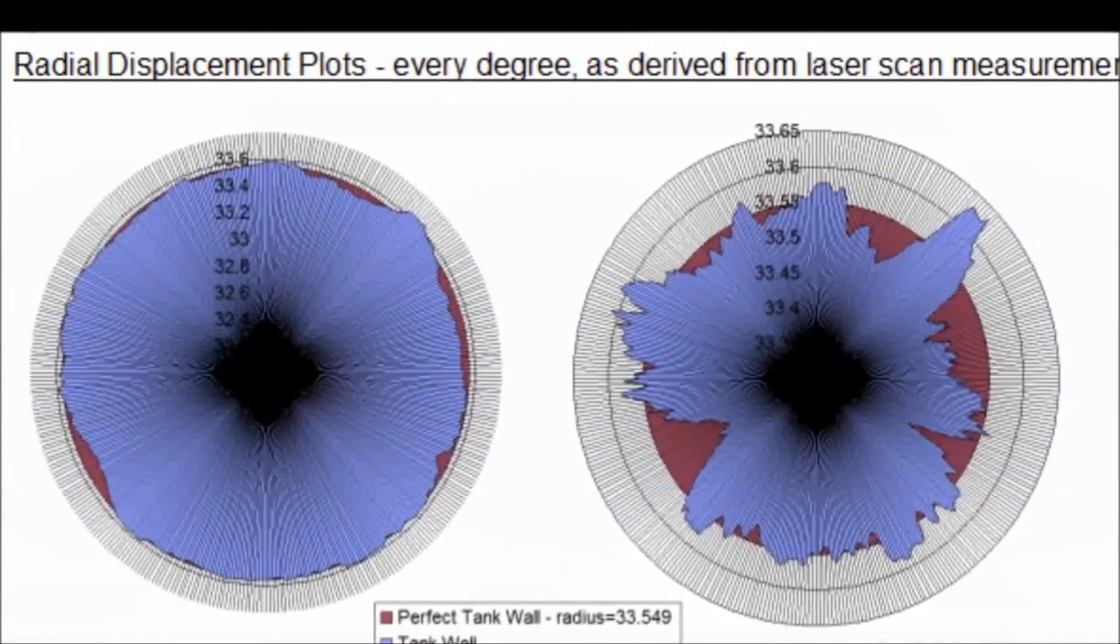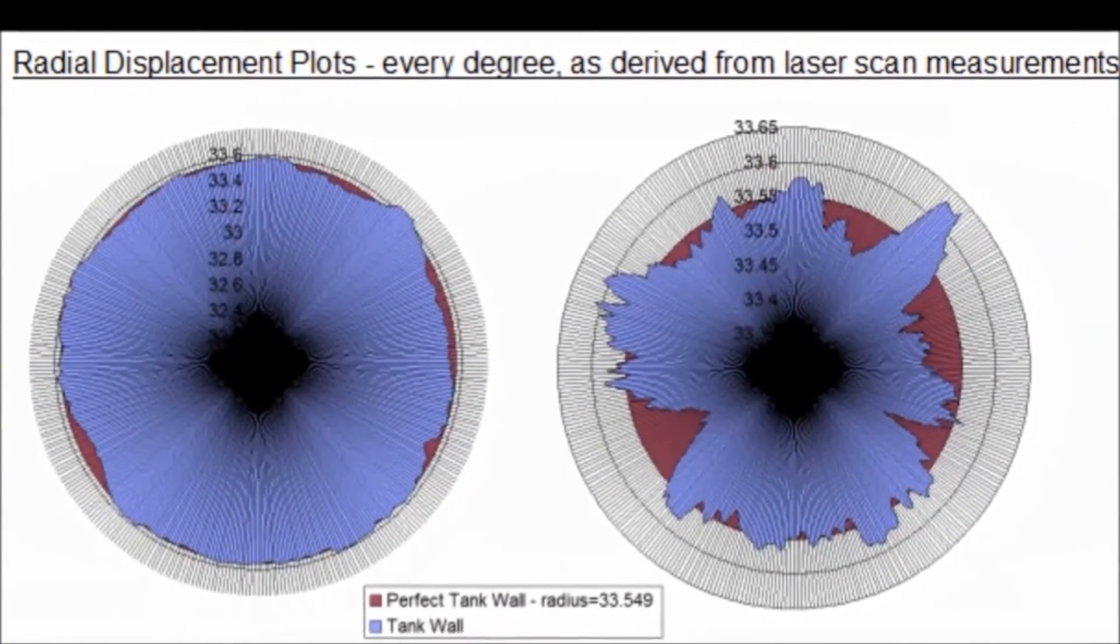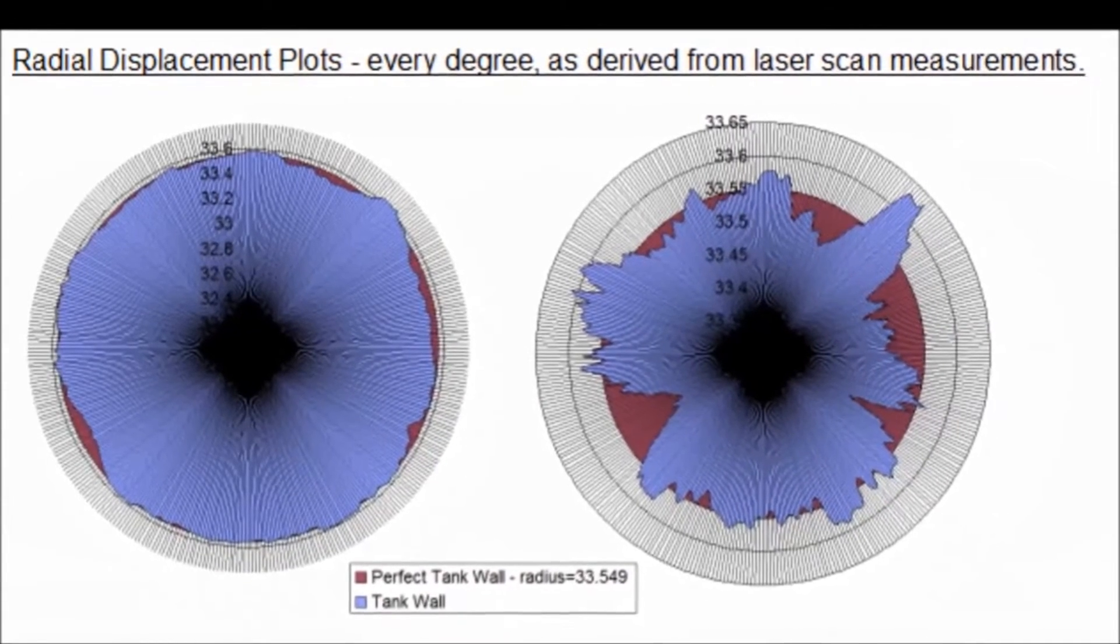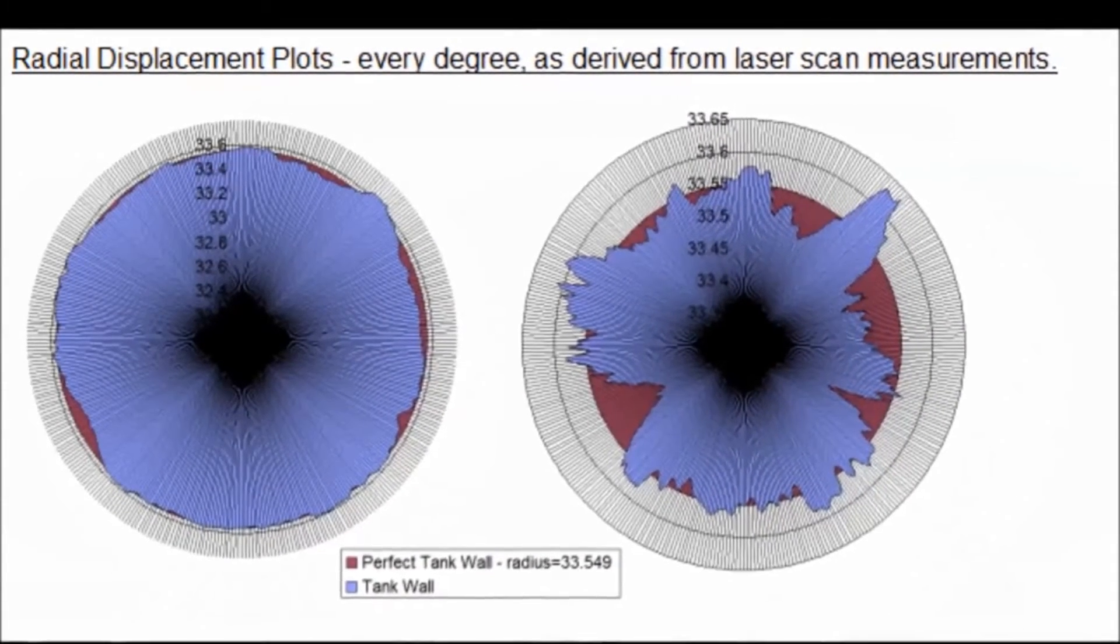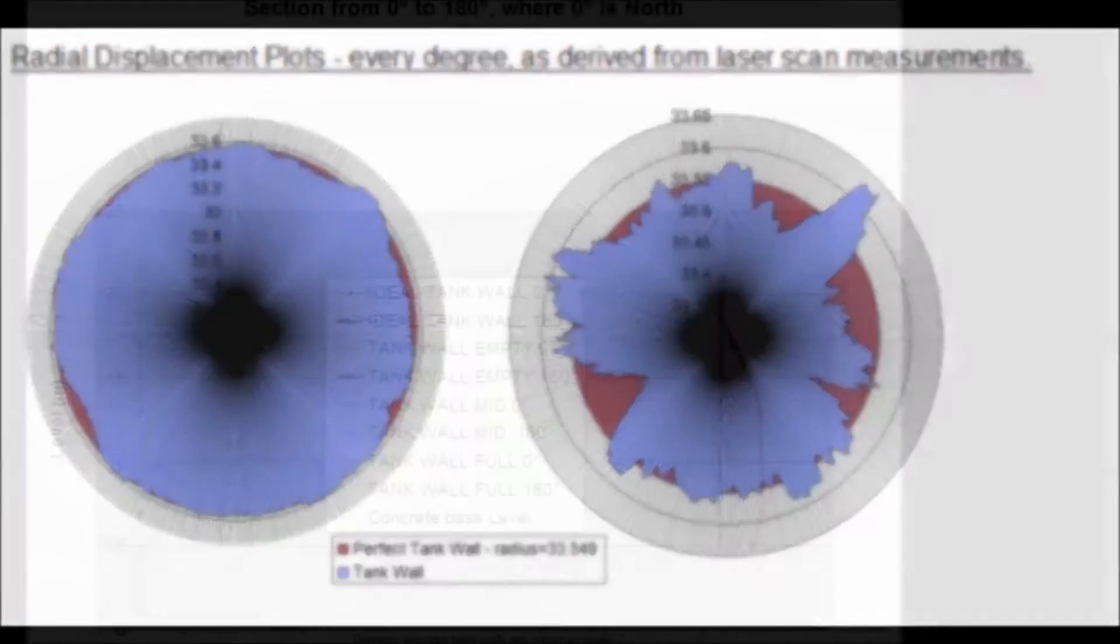We can exaggerate the small differences to better help visualise the deviations. In this case, the largest deviations are approximately 7cm from the ideal tank shell.